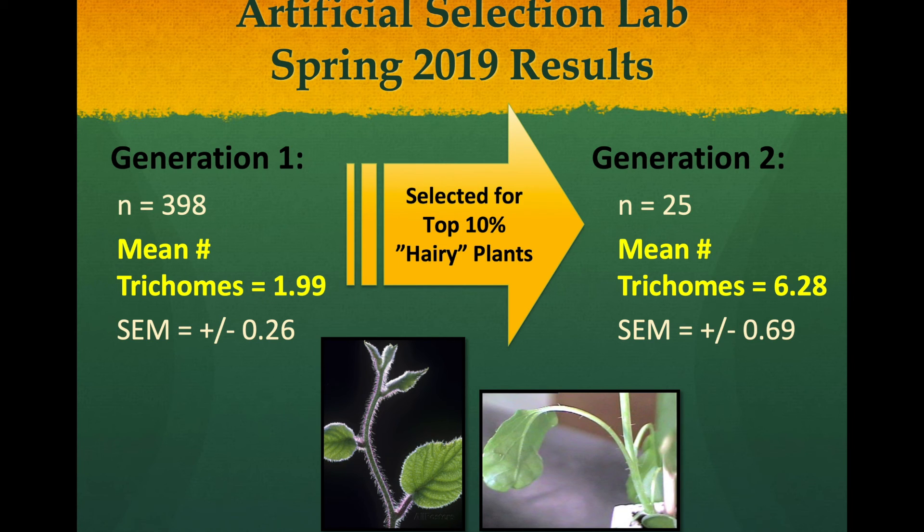So let's compare the two generations, generation one and generation two. Generation one last year had mean number of trichomes calculated to be 1.99. And for generation two, even though there are only 25 plants, their mean number of trichomes already at 25 plants was 6.28.